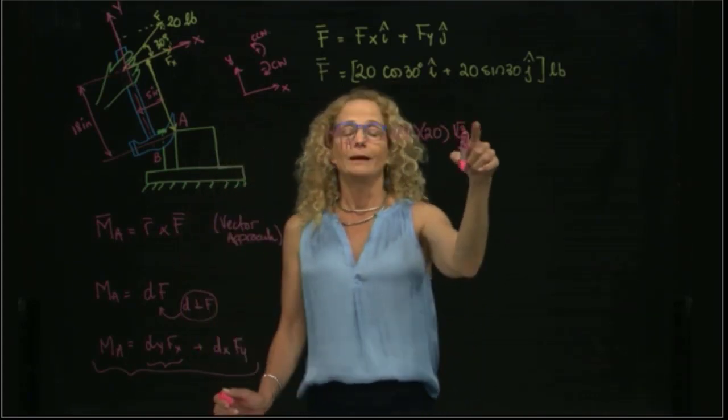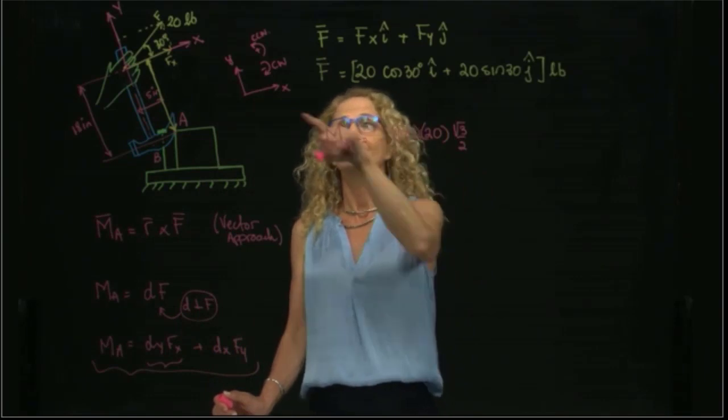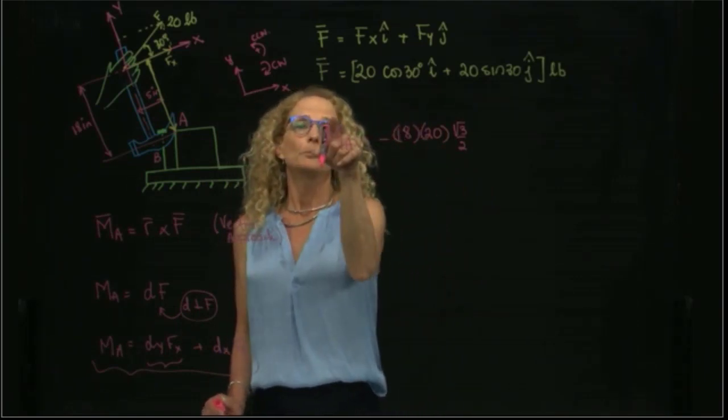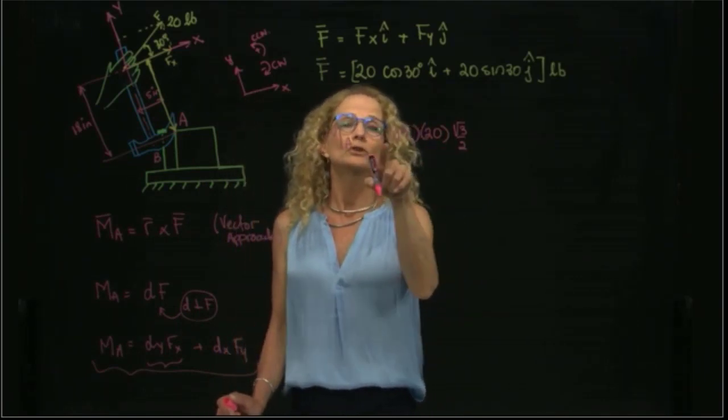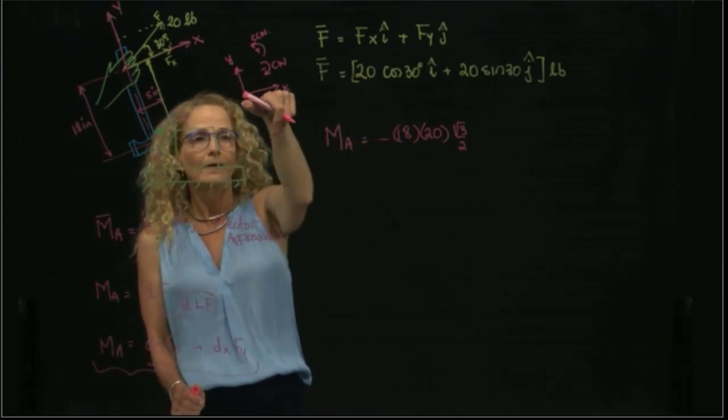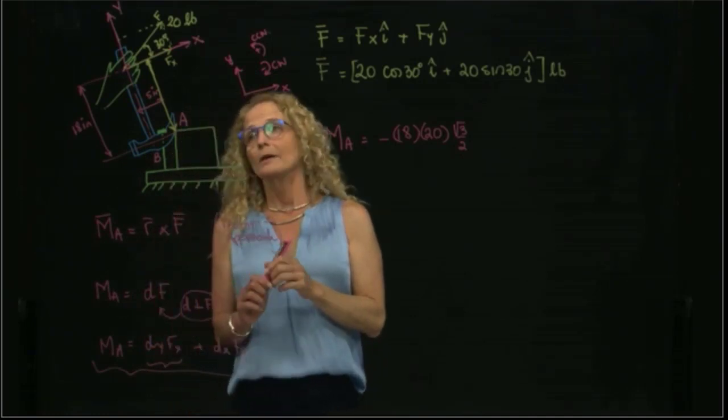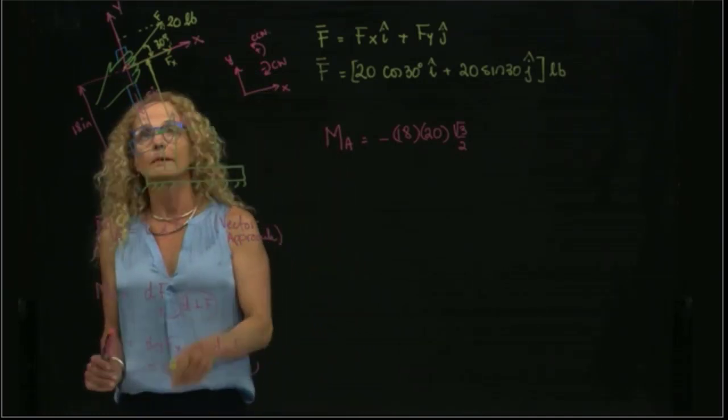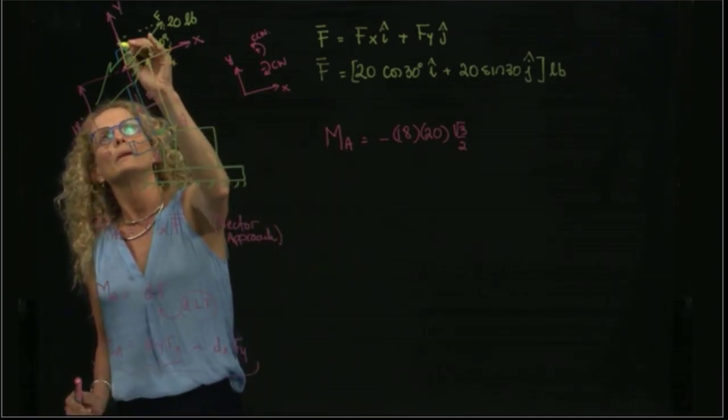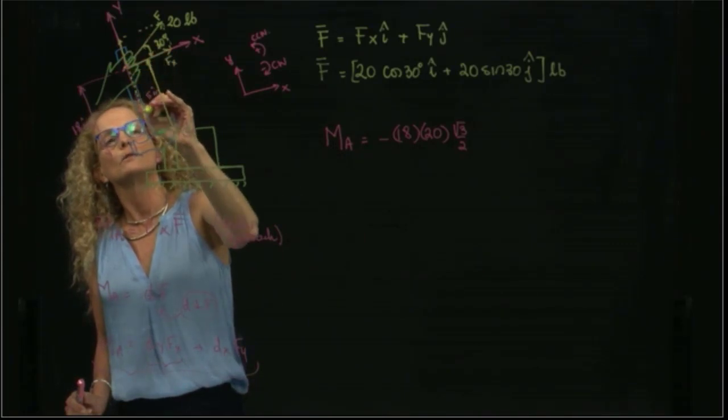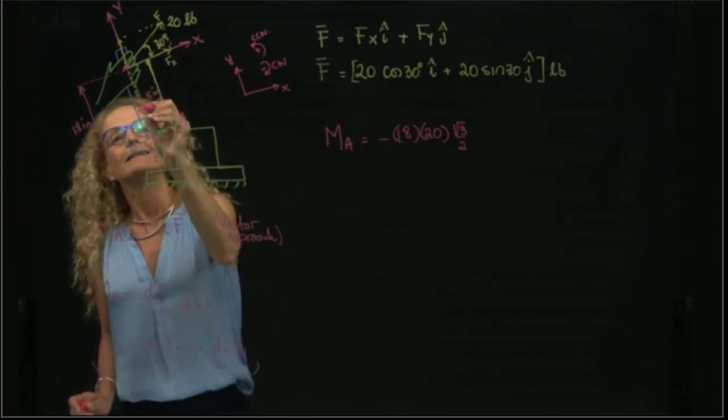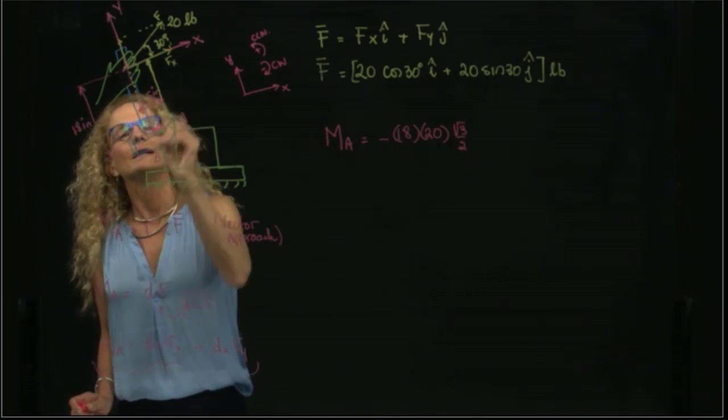And I don't put any... I know that this moment is in k, but I'm not putting any vector, I'm doing a scalar approach. And this sign means that it's negative k, that it goes in this direction. Now I have the y component, and I have to find... this is the y component. I slide my force over here.